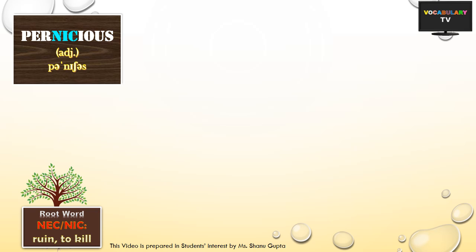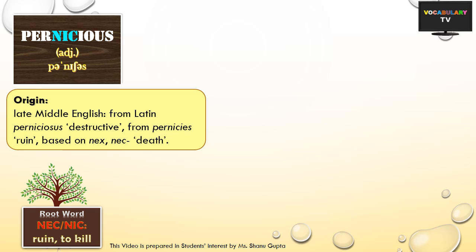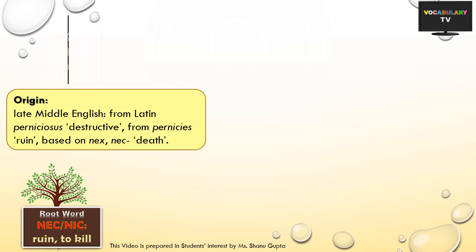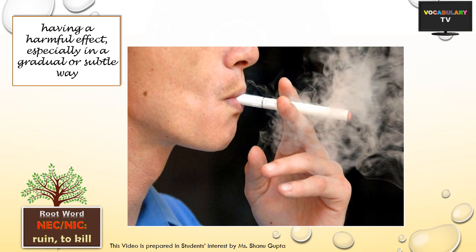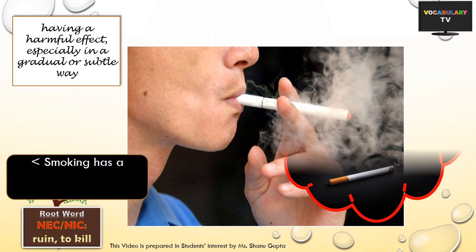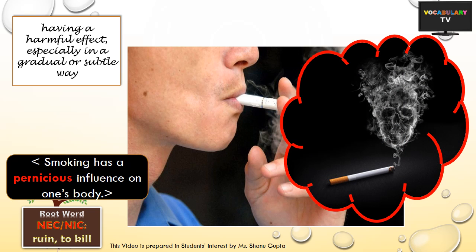Two particularly important and popular words are pernicious and internecine. In both, the base root takes the spelling N-I-C or N-E-C meaning death, ruin or to kill. Pernicious literally means causing ruin or destructive. It describes a thing or phenomenon which has a harmful effect, especially in a gradual or subtle way – something deadly and extremely evil. For example, excessive smoking is known to have a pernicious influence on one's body.